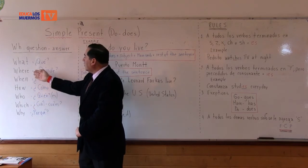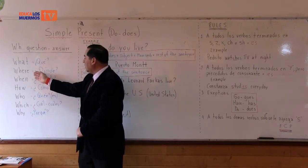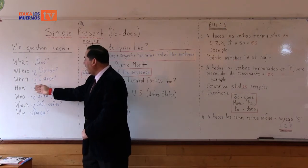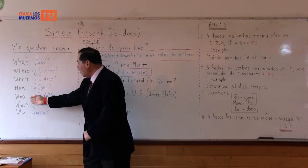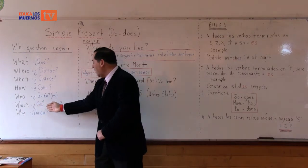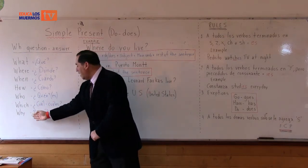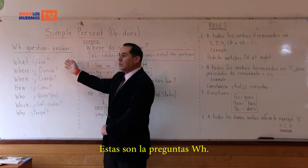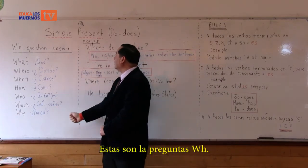We have: what (qué), where (dónde), when (cuándo), how (cómo), who (quién), which (cuál o cuáles), and why (por qué). These are called the WH questions.